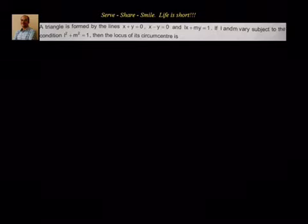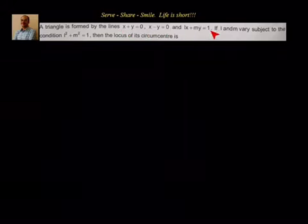A triangle is formed by the lines x plus y equal to 0, x minus y equal to 0, and lx plus my equal to 1. If l and m vary subject to the condition l squared plus m squared equal to 1, then the locus of its circumcenter is what? That's what we have to find out.